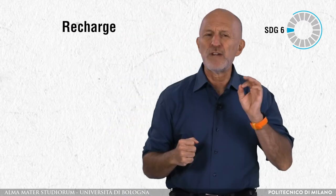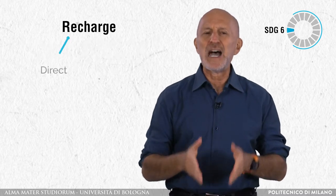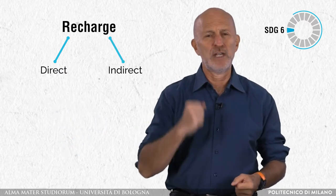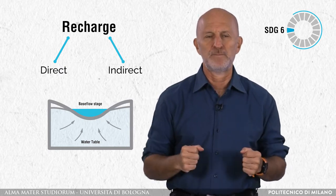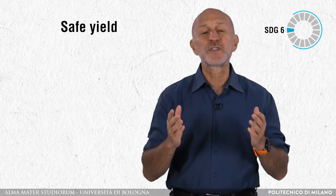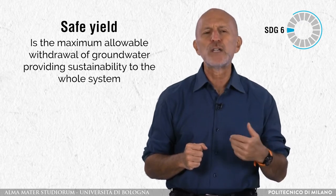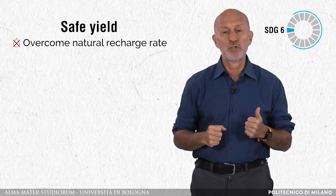Two are the critical parameters to be evaluated in order to properly manage the exploitation of aquifers: recharge and safe yield. Recharge is the hydrological process that provides water to the aquifer. Direct recharge from rainfall and snowfall through infiltration, indirect recharge from surface runoff, and incidental recharge from human activities are the components. The safe yield or sustainable yield is the maximum allowable withdrawal of groundwater, providing sustainability to the whole system in order not to overcome natural recharge rates.